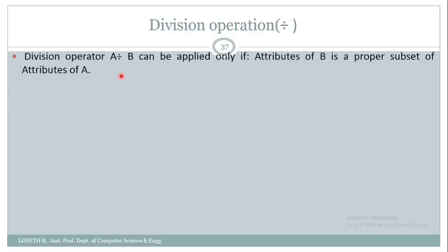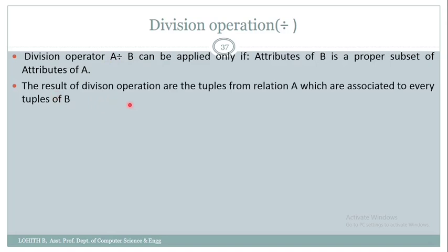Division operation A divided by B can be applied only if the attributes of B are a proper subset of the attributes of A. The result of the division operation are the tuples from relation A which are associated with every tuple of relation B.